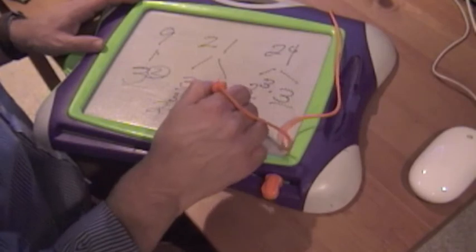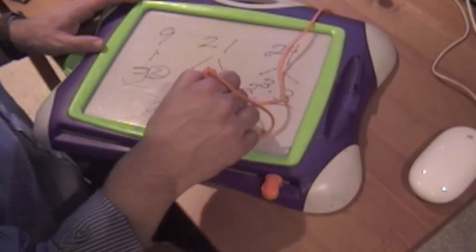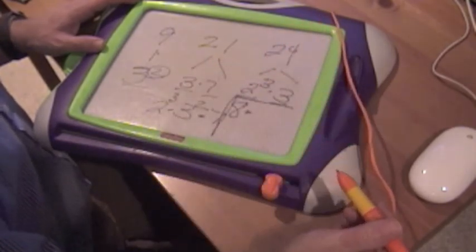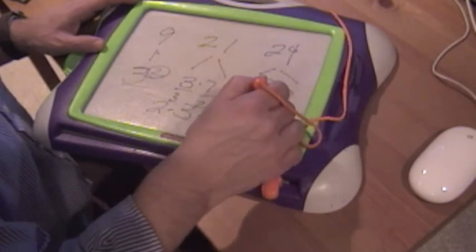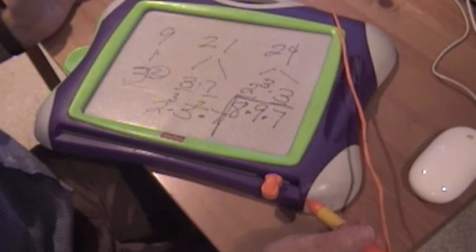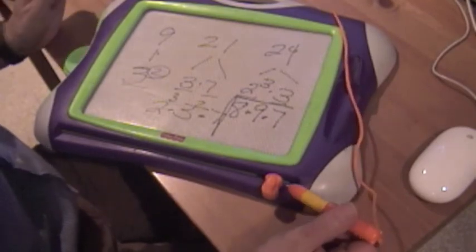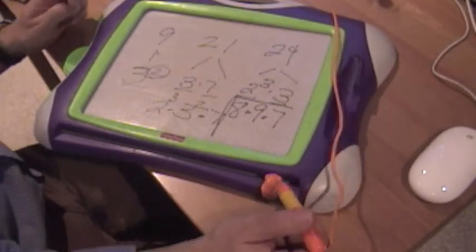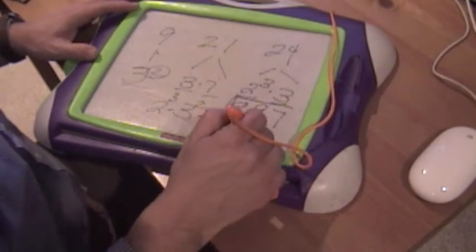So 2 cubed is 8 times 3 squared is 9 times 7. So you're looking at a very large number there. That's going to be 63 times 8. Honestly I don't know what that is off the top of my head. Looking at the book, it's 504.